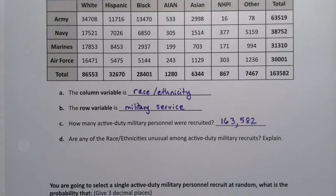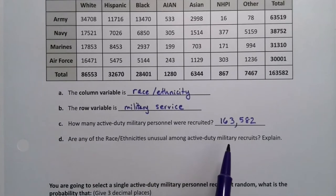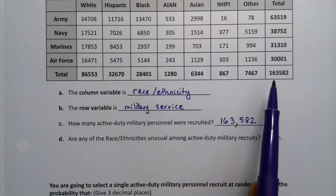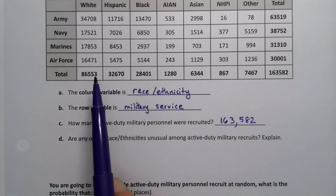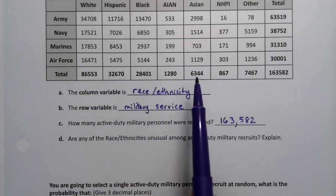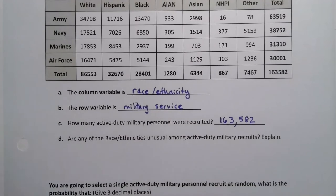Are any of the race and ethnicities unusual among active duty military recruits? Interesting. Okay, well, to figure that out, we would have to figure out what the probabilities of these values are. So we can probably guess that white, Hispanic, black are probably not. We're looking for the smaller ones because we want to see if they're less than 5%. Remember that unusual means less than 5% or 0.05.